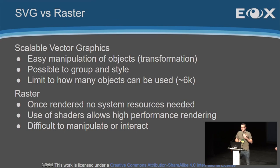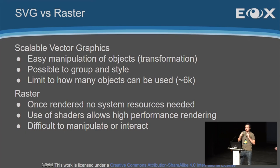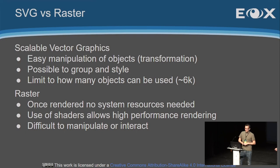Let's compare vector graphics against raster. With SVG you have really nice manipulation — you have groups, you can transform complete groups, you can do a lot of nice animations. But one of the main limitations is how much stuff you can put in — the system gets quickly overwhelmed because you have all these as DOM nodes that have to be kept track of. Raster, on the other hand, once you render it, you're basically saying this pixel is this color and that's it. There's no trivial way of interacting with that — it's difficult to interact and manipulate — but it's super fast.